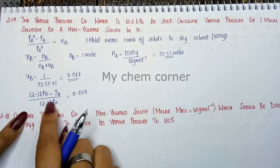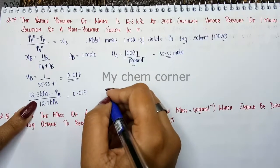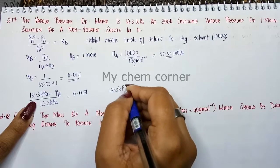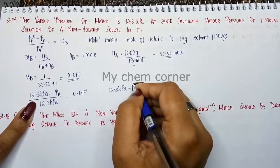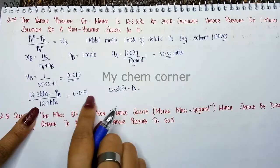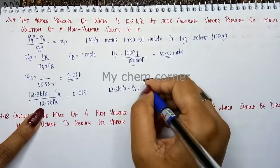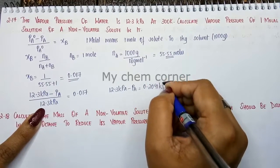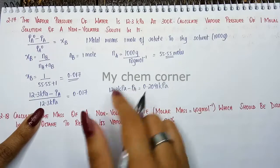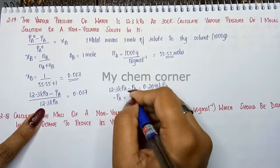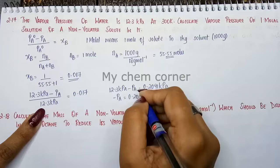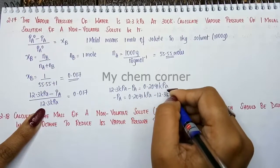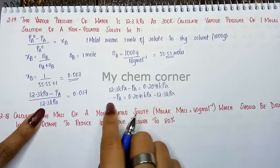Now, we have to just cross multiply both. When we cross multiply this, you will get 12.3 kilopascal minus P_A equals 0.017 into 12.3. When you cross multiply, you will get 0.2091 kilopascal. Now, take out P_A, it will become minus P_A is equal to 0.2091 kilopascal minus 12.3 kilopascal.